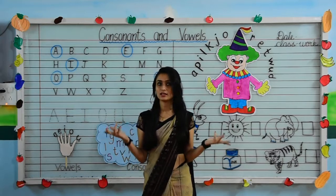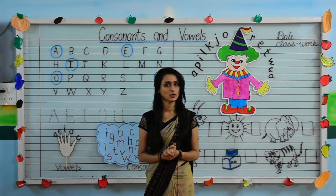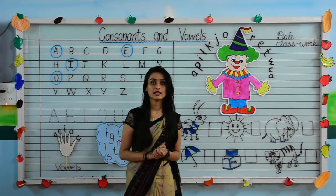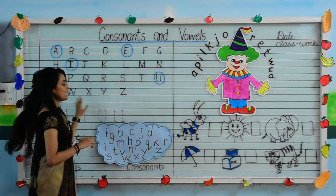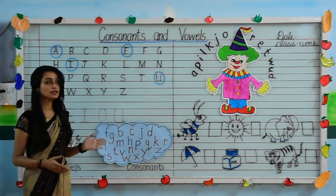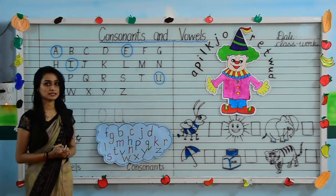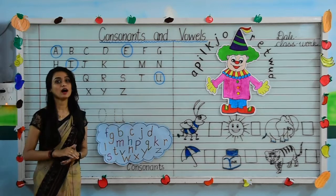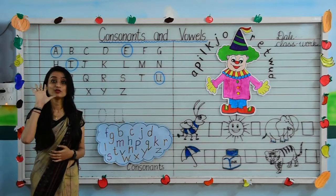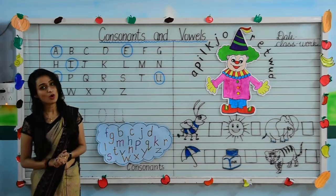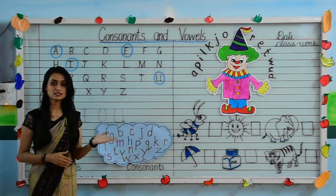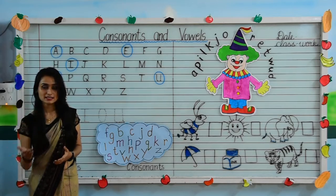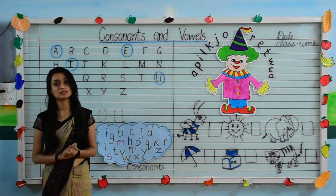Do you all know what are consonants and vowels? Let me tell you. As you all know, there are 26 alphabets. In these 26 alphabets, 5 are vowels, and the rest 21 letters are consonants.